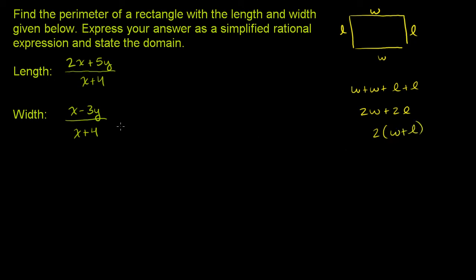We have to find what 2 times the width plus the length is as a rational expression. The perimeter is going to be equal to 2 times the width plus the length, or we could say the length plus the width, either way. The width is (x - 3y)/(x + 4), and the length is (2x + 5y)/(x + 4).